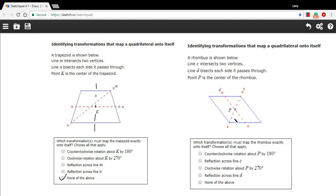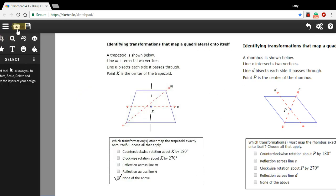Let's take a look at this rhombus over here on the right. Our choices, one of our choices is to rotate it around p 180 degrees and you might be able to eyeball that. I'm just going to actually try it here.